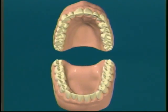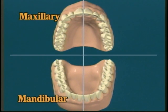The upper jaw, or arch, is referred to as the maxilla, or the maxillary arch. The lower jaw, or arch, is referred to as the mandible, or the mandibular arch.